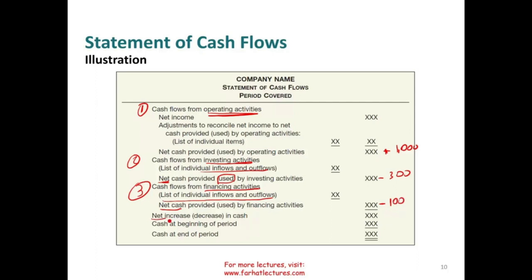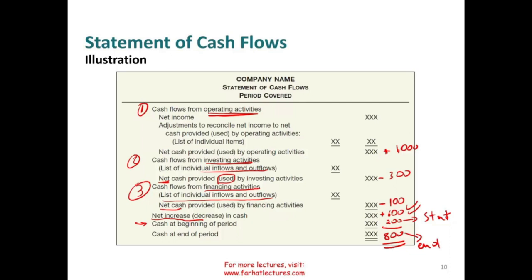For example, assume operating provides $1,000, investing uses $300, and financing uses $100. The net increase in cash is $600. We add that to beginning cash of $200 to arrive at ending cash of $800. So we started the year with $200 and ended with $800 because cash went up by $600 — $1,000 from operating, spent $300 on investing, and $100 on financing.